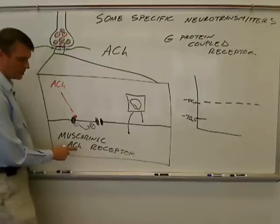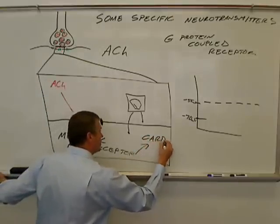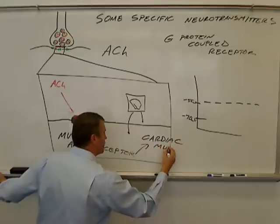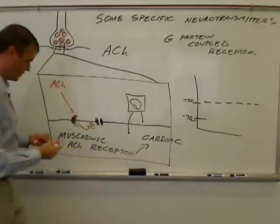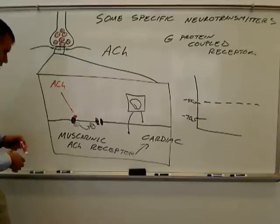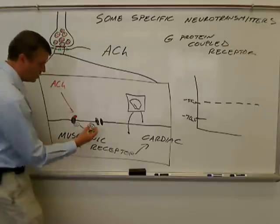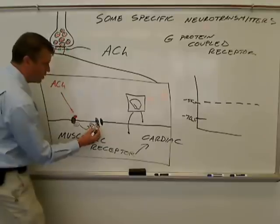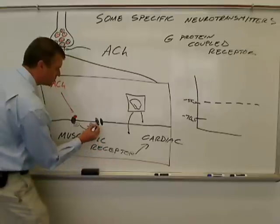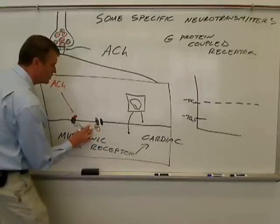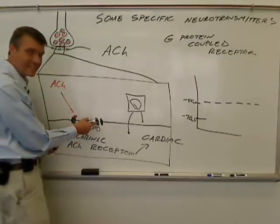And the muscarinic acetylcholine receptor that I'm talking about specifically is found in the heart. So I'm just going to say it's a cardiac muscarinic acetylcholine receptor. That's as far as I'll take it in terms of detail. This G-protein comes over, and it binds to this protein.